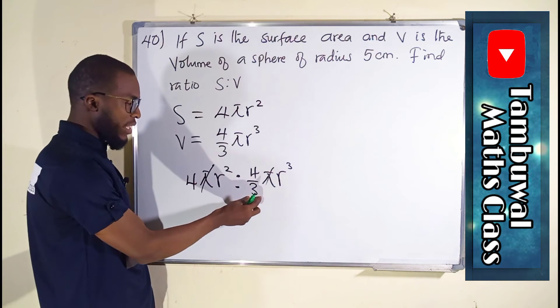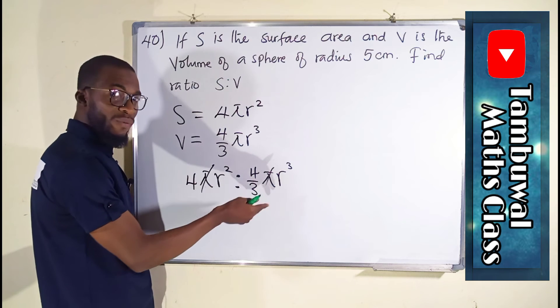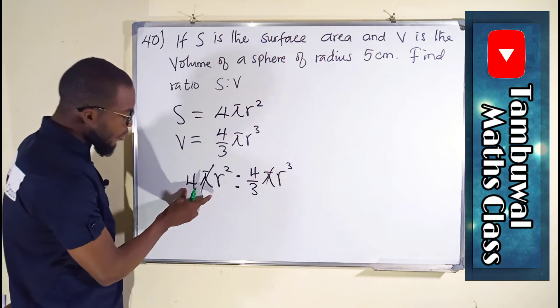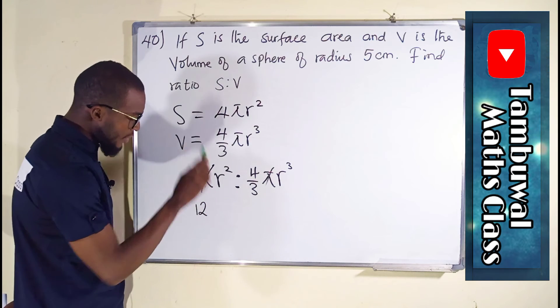I have a fraction here, so I may decide to get rid of this fraction by multiplying here and here by 3. So, if you multiply 4 by 3, you get 12. Already π is gone.